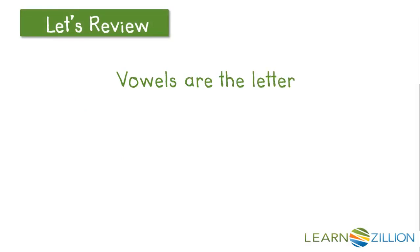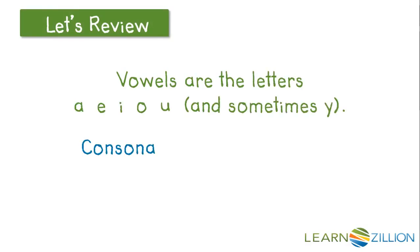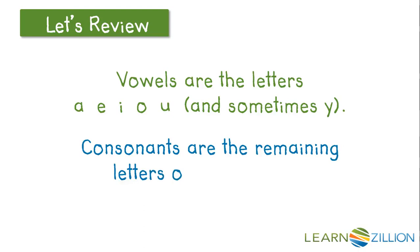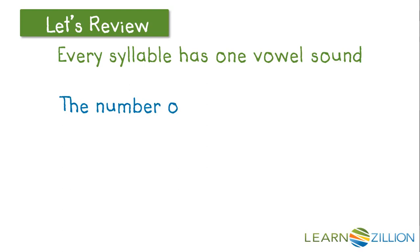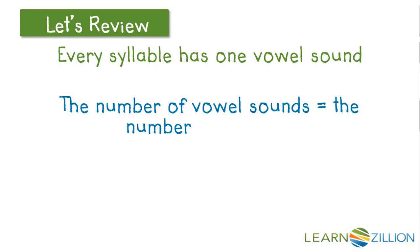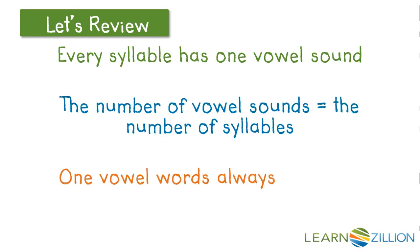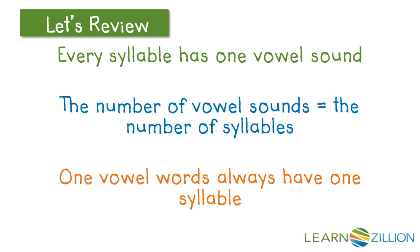Vowels are the letters a, e, i, o, u, and sometimes y, and consonants are the remaining letters of the alphabet. Every syllable has one vowel sound, and the number of vowel sounds equals the number of syllables. So one-vowel words always have one syllable.